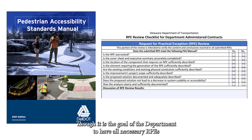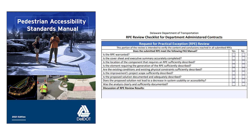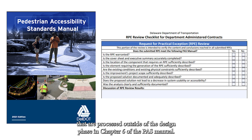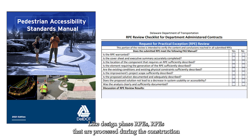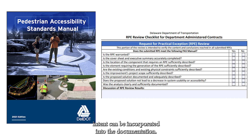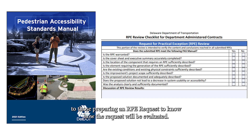Though it is the goal of the Department to have all necessary RPEs processed during the design phase, there may be occasions where an RPE may need to be processed after the design phase. The Department provides detailed procedures for obtaining RPEs that are processed outside of the design phase in Chapter 6 of the PASS Manual. Like design phase RPEs, RPEs processed during the construction phase are to be prepared by or under the direct supervision of the engineer of record so that the engineer of record's design intent can be incorporated into the documentation. The RPE Review Checklist, available on DELDOT's Design Resource Center, may be helpful to those preparing an RPE request to know how the request will be evaluated.